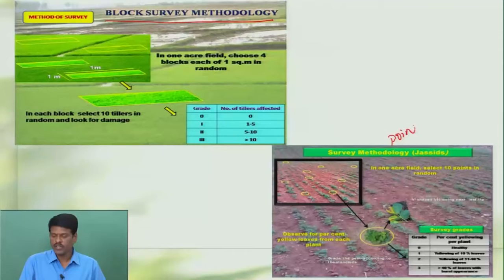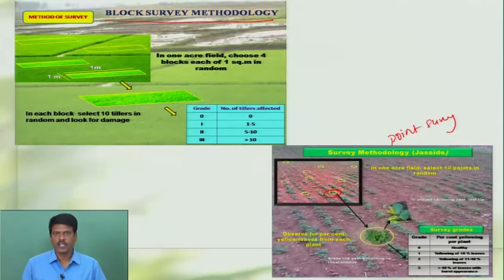In point survey, we will take 10 or 20 spots depending on our requirement, randomly selected in an area. From each spot, we look at either damage or the pest count and record it. So either in a roving survey or a fixed plot survey, we follow either a block method or the point survey method. If we do this type of survey repeatedly over a period of time, then that will be referred to as surveillance — pest surveillance.